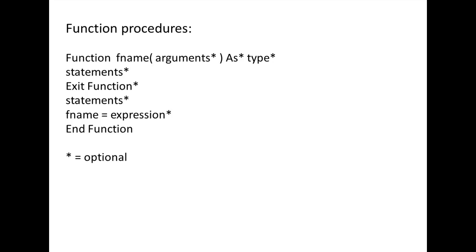The general syntax for a function procedure is the following. A function procedure begins with 'Function', followed by the name of the function procedure and parentheses. Arguments may be placed inside the parentheses, and a data type may be specified. If you do not provide a data type, VBA will automatically assign one. The function procedure ends with the 'End Function' statement. Inside the function procedure, we can place statements that do various tasks, such as perform calculations, display output, or invoke additional procedures.